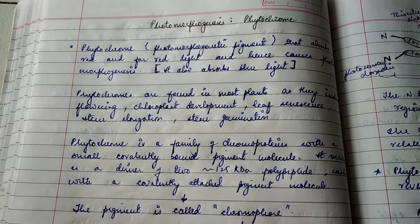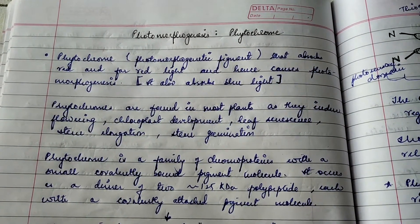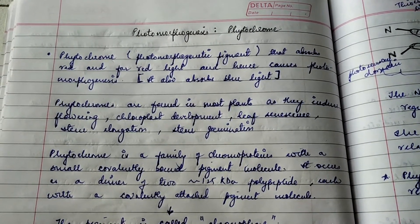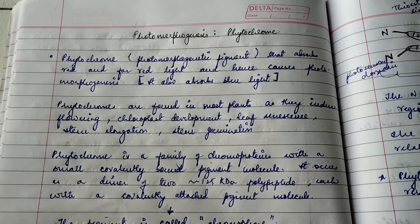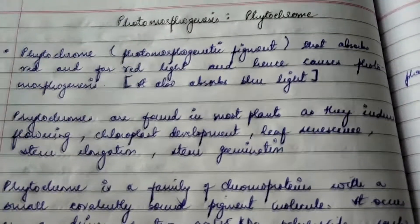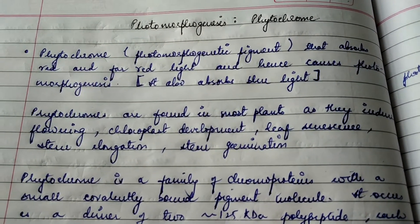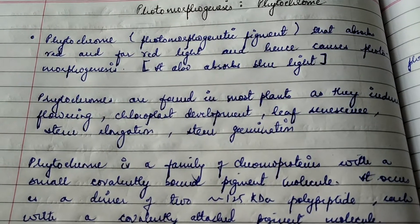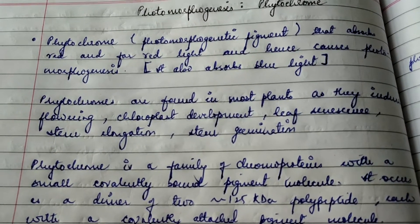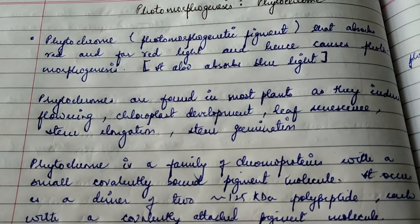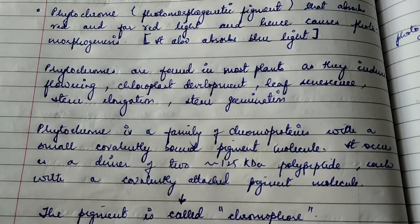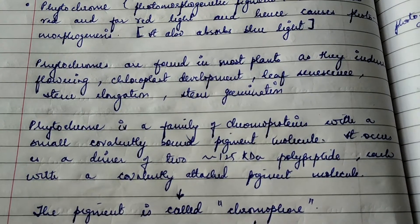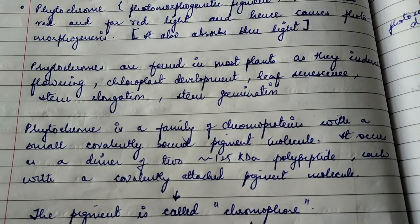Phytochrome is the photomorphogenetic pigment that absorbs red and far-red light, and hence causes photomorphogenesis. It also absorbs blue light, so it is referred to as the photomorphogenetic pigment. Phytochromes are found in most plants and they induce chloroplast development, leaf senescence, stem elongation, seed germination, flowering, and every other process seen in growing plant stages.